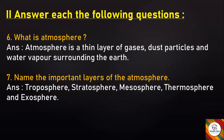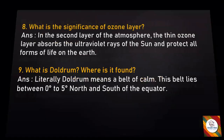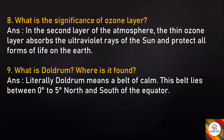What is the significance of the ozone layer? Answer: In the second layer of the atmosphere, the thin ozone layer absorbs the ultraviolet rays of the sun and protects all forms of life on the Earth. What is doldrum and where is it found? Answer: Literally, doldrum means a belt of calm. This belt lies between zero degrees to five degrees north and south of the equator.